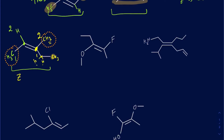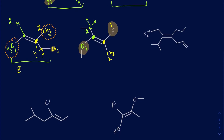So this particular one is Z. For the next example, looking at the green carbon: on the bottom I have an oxygen and on the top a carbon with two hydrogens. Oxygen has a higher atomic number than carbon, so oxygen is priority one and the carbon is priority two. On the yellow carbon, I have a methyl group on the bottom and fluorine on the top. Fluorine has a higher atomic number than carbon, so fluorine is priority one and the methyl is priority two. The higher priority groups are opposite to one another, making this an E form.